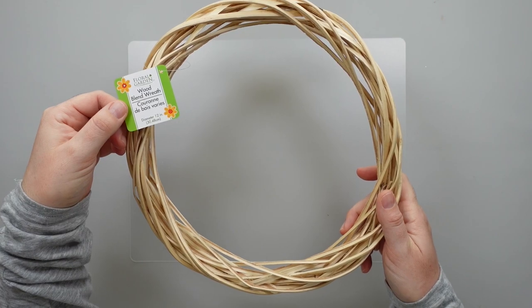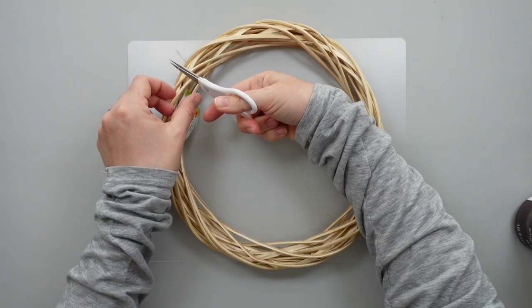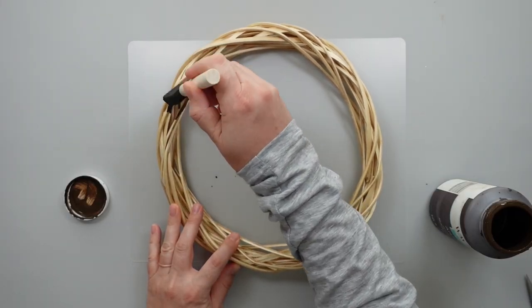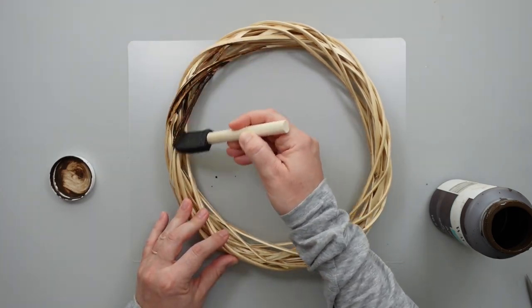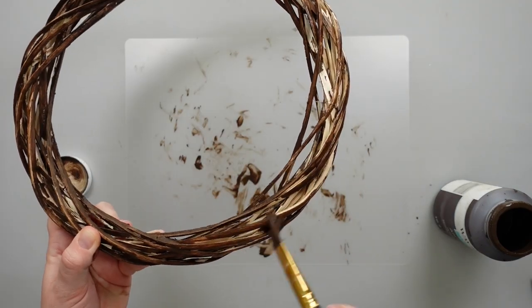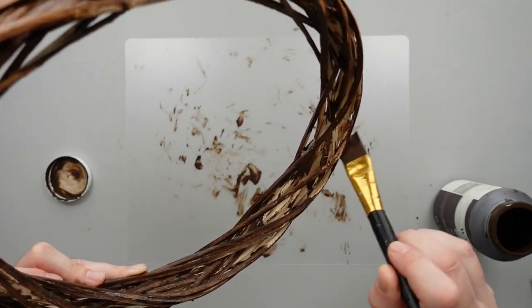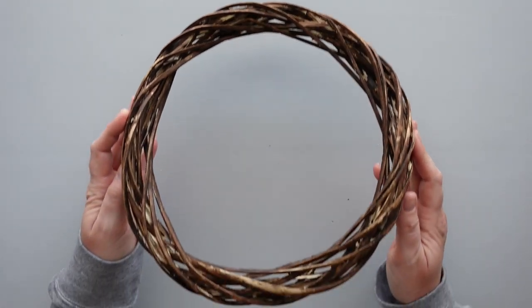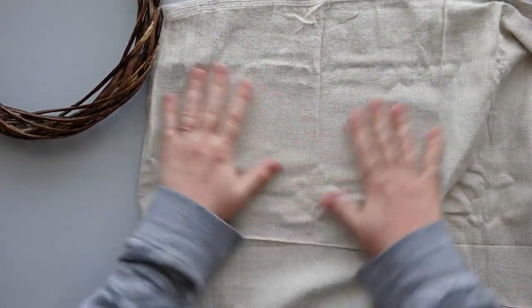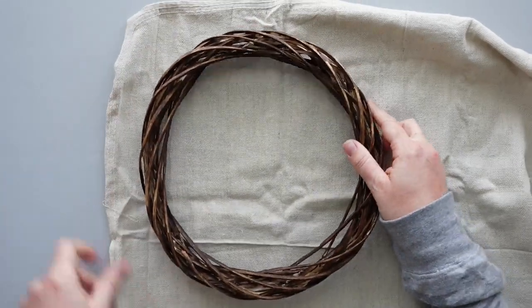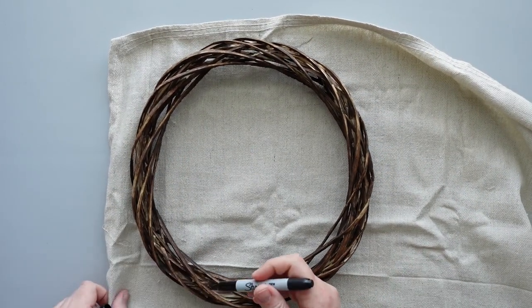This next project was inspired by something I saw while shopping at Joanne a few weeks ago. I started with a wood blend wreath from Dollar Tree. I removed the tag and gave the entire wreath a coat of antique wax from Waverly. The nooks and crannies on this wreath made it a bit challenging to paint, but I think the imperfections give it character. Once the wax was dry, I grabbed this canvas drop cloth that I picked up at Lowe's. I spread out the canvas and placed the wreath in the corner. Then I traced around the wreath with a sharpie and cut it out.